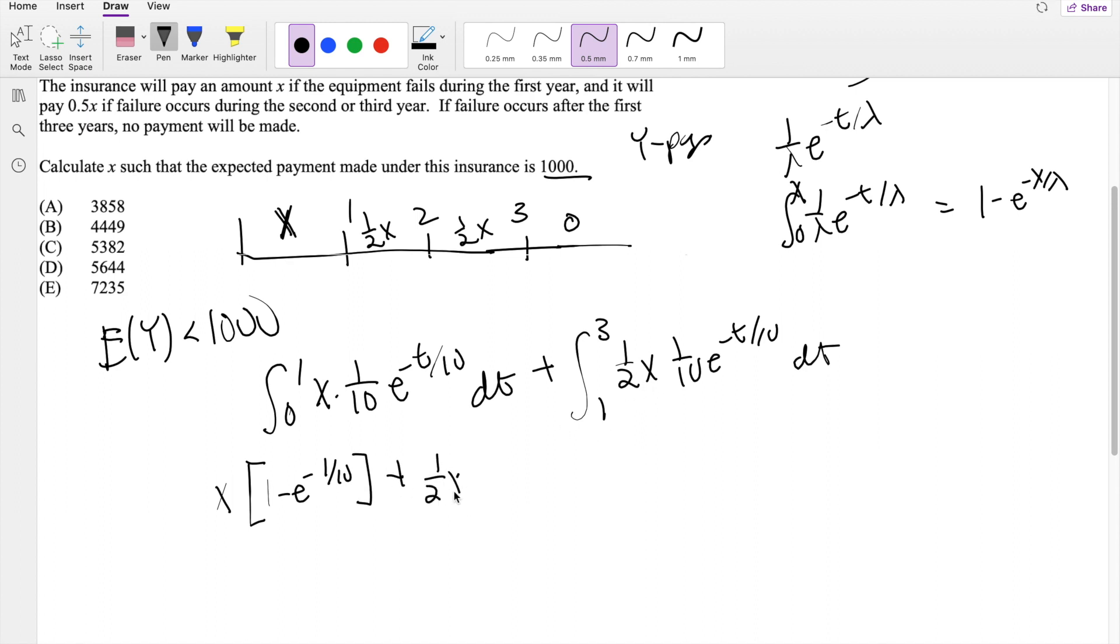This one would be equal to one half X. Again, X is just a constant, so I can throw it outside. One tenth, E to the negative T over 10, taking the antiderivative, you get negative E to the negative T over 10.